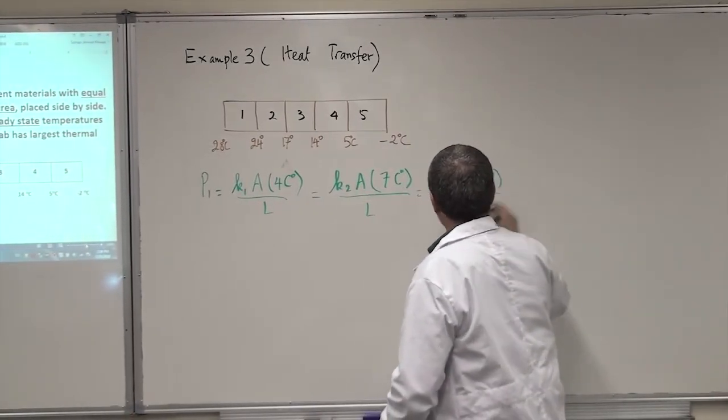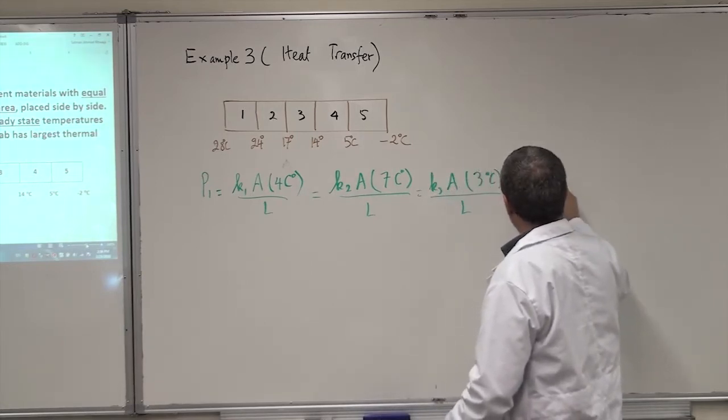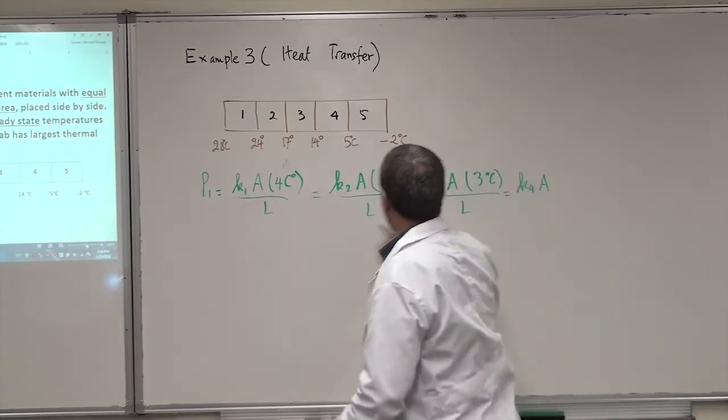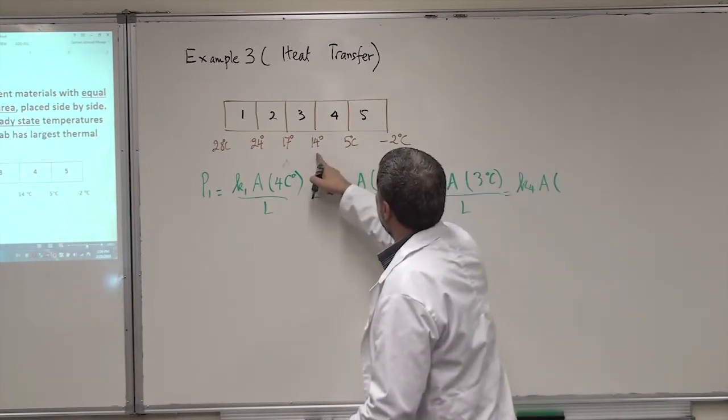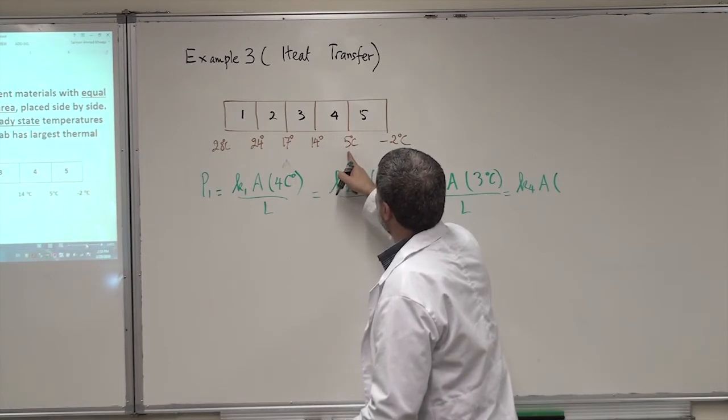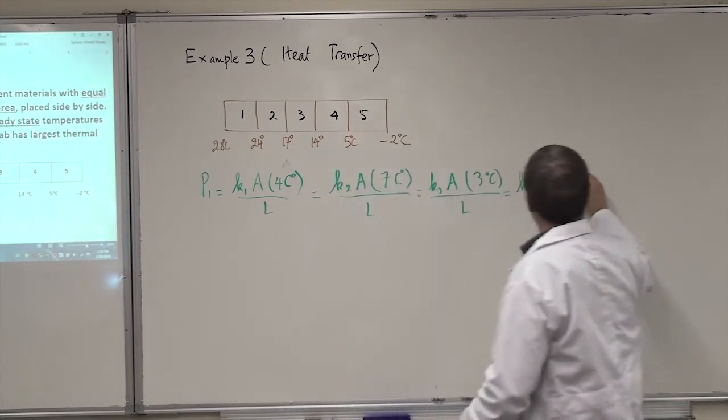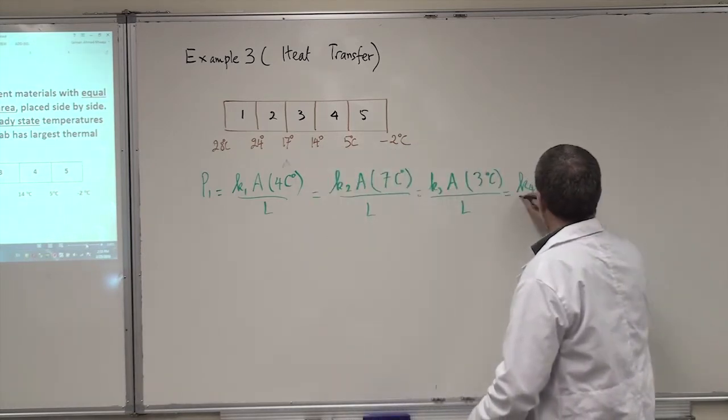Equal K4. Area, the area is the same, and the length is the same in all of them. What is delta T here? It is 5 plus 4, that's 9. 9 C degree. Over L.